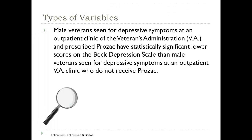The dependent variable here is level of depression, and it's operationally defined as scores on the Beck Depression Scale. Are there any control variables in this scenario? Remember, control variables are things that you want to neutralize in a research study — they can be statistically controlled for, or the researcher can limit the population from a research design perspective. Look here and identify: are there any control variables?